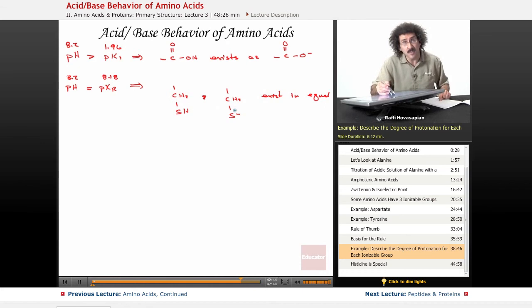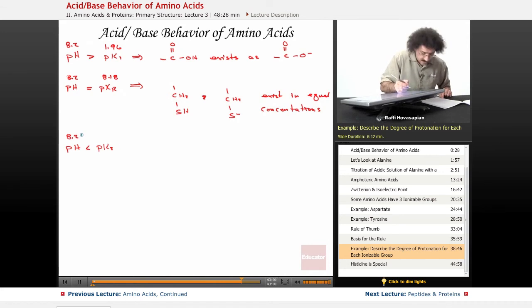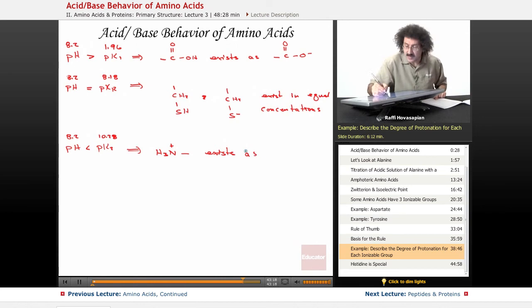So in this case, they're both like that. It's a little bit of this, a little bit of that, half and half, exist in equal concentrations. Now, the pH happens to be less than the pK2. Again, the pH is 8.2, and this is 10.28. Well, this implies that the amino group, the alpha amino group, exists as its protonated form. The pH is less than the pKa, so it has not ripped away this hydrogen. It's still H3N+.